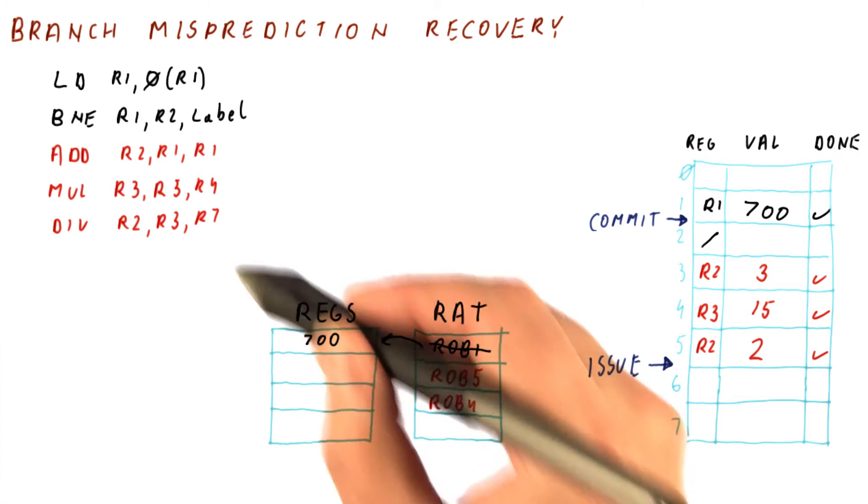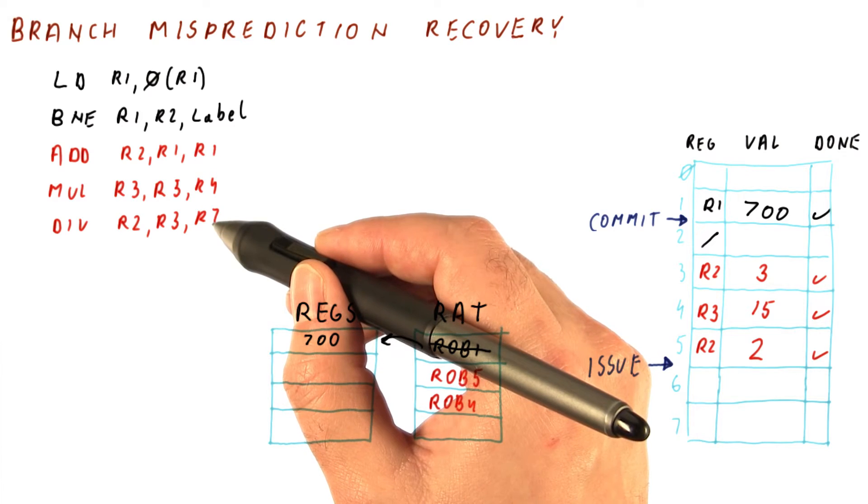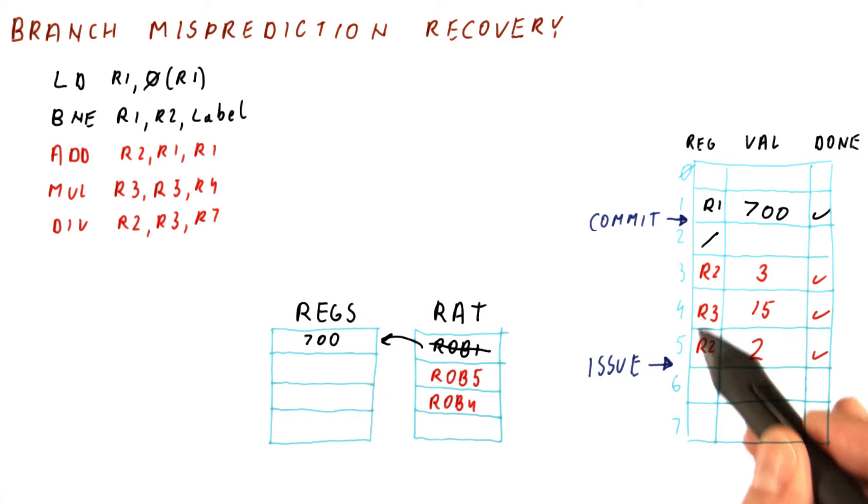Meaning that we would have kept in the registers the value of 2 that we would have written for the divide, because that's the latest R2. But in this case, we don't do any of that. We just keep the values in the ROB as is.